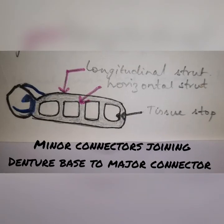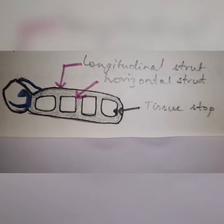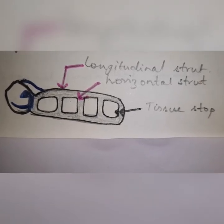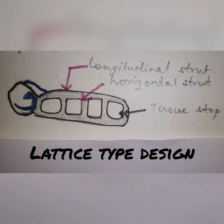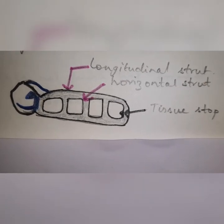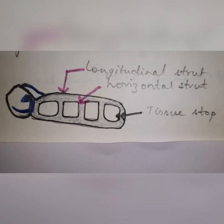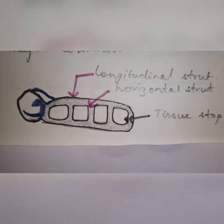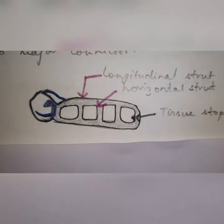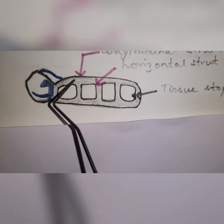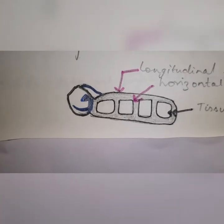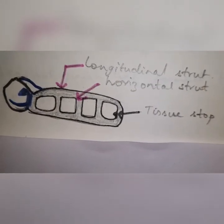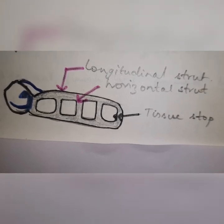The third type of minor connector joins the denture base to the major connector. There are three subtypes: the lattice type, the mesh type, and the nail head or bead-shaped type. The lattice type has two metal struts — longitudinal struts with horizontal struts in between. These metal struts are 12 to 16 gauge in thickness, extending longitudinally over the edentulous area.